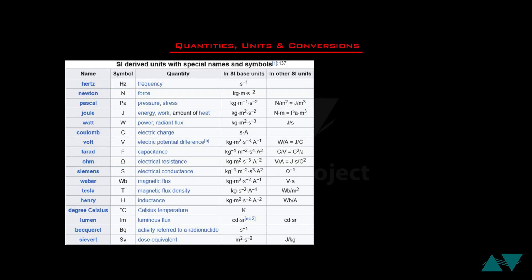Derived units can be identified by compound symbols — for example, meter per second, meter per second squared, kilogram per meter cubed. However, some derived units have special names and symbols. There are 22 such special derived units. For example, frequency has the unit per second, but its special name is hertz and its special symbol is Hz. Force has the unit kilogram meter per second squared, but its special name is newton and its special symbol is capital N.